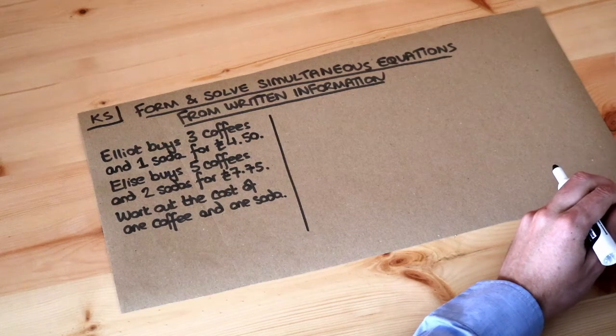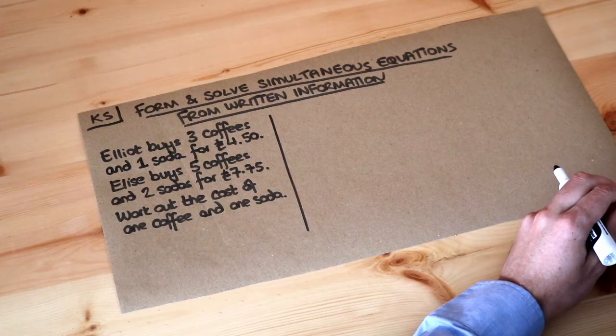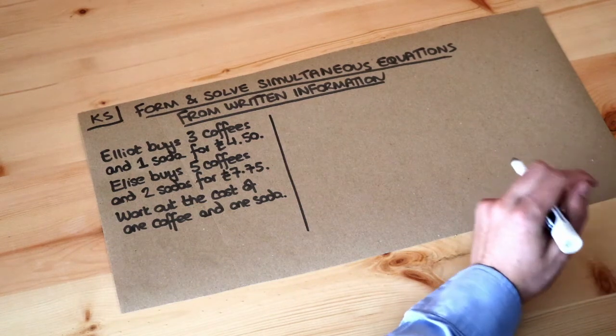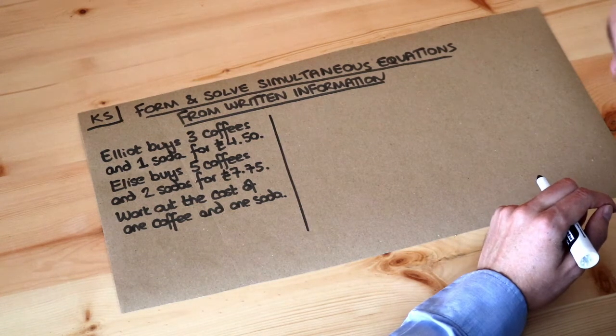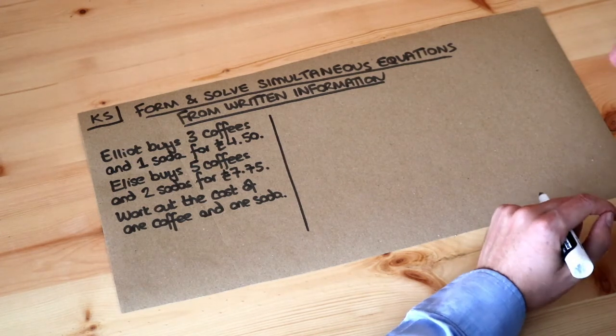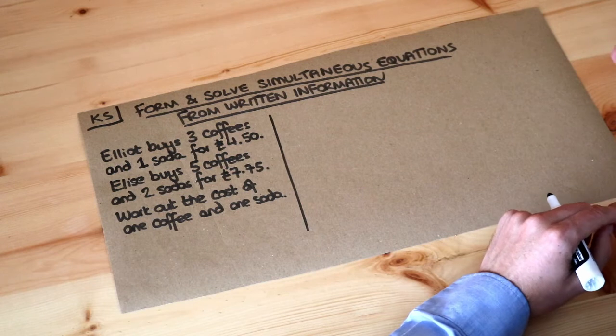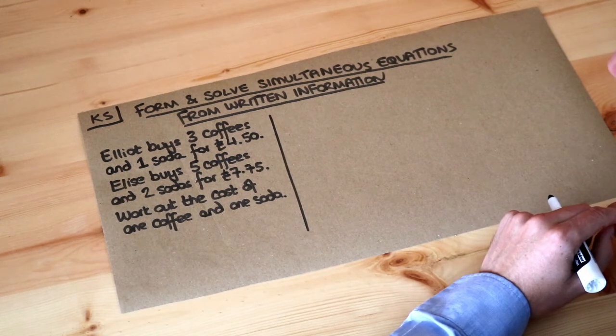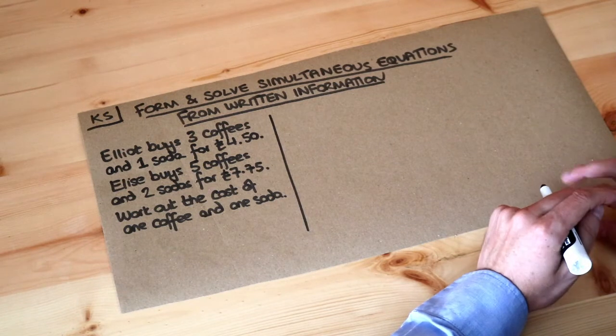Hello and welcome to Dr. Rosemath's key skill video on forming and solving simultaneous equations from written information. Let's read the question. Elliot buys three coffees and one soda for £4.50. Elise buys five coffees and two sodas for £7.75. Work out the cost of one coffee and one soda.